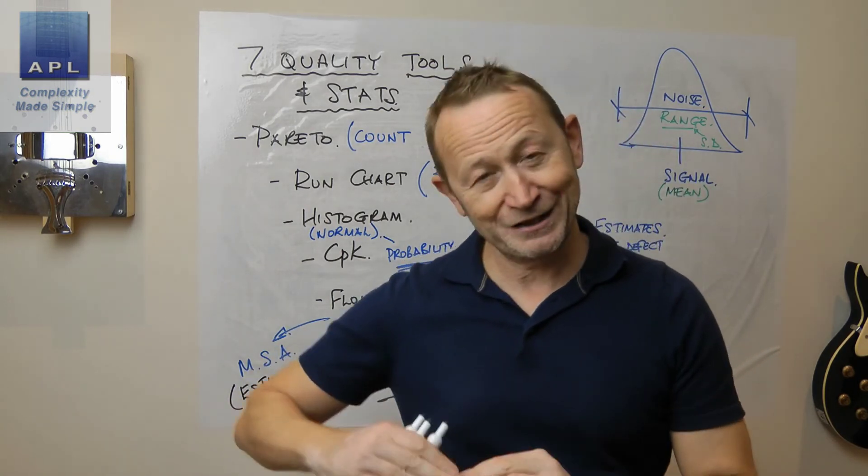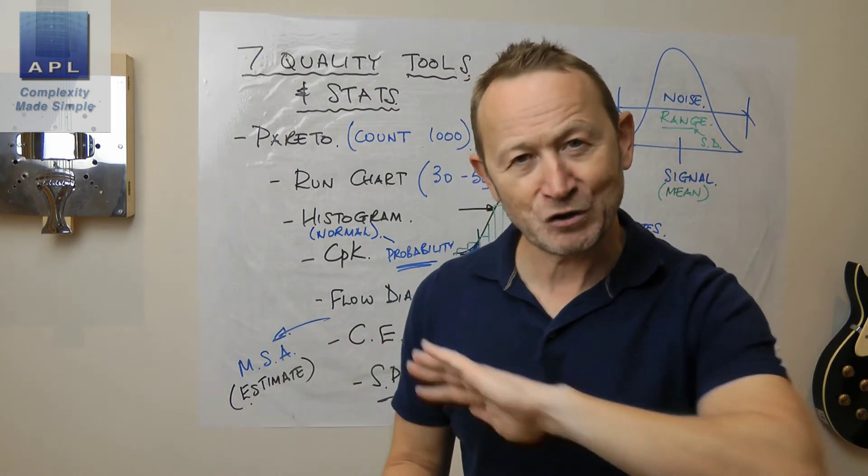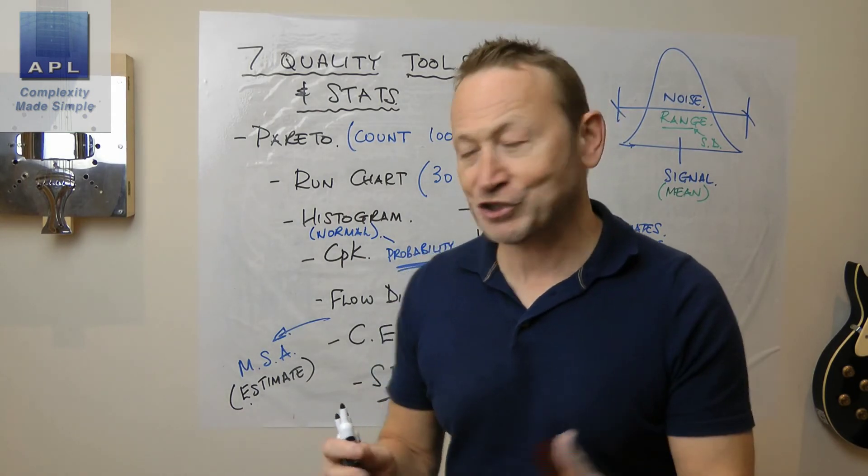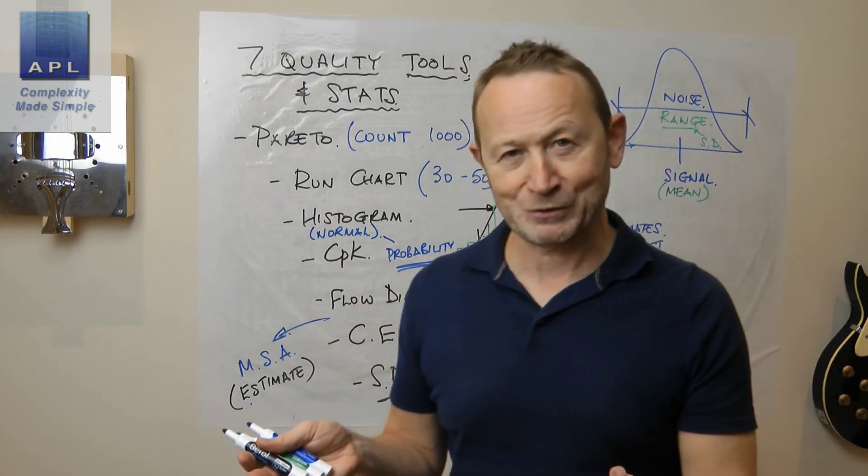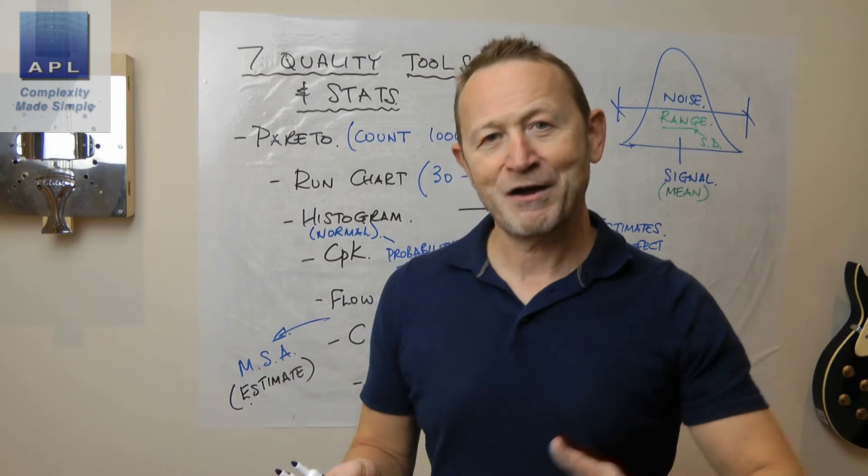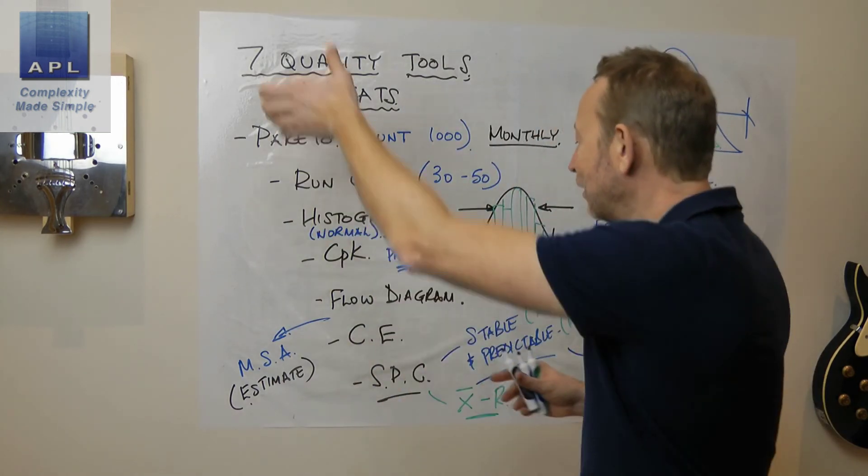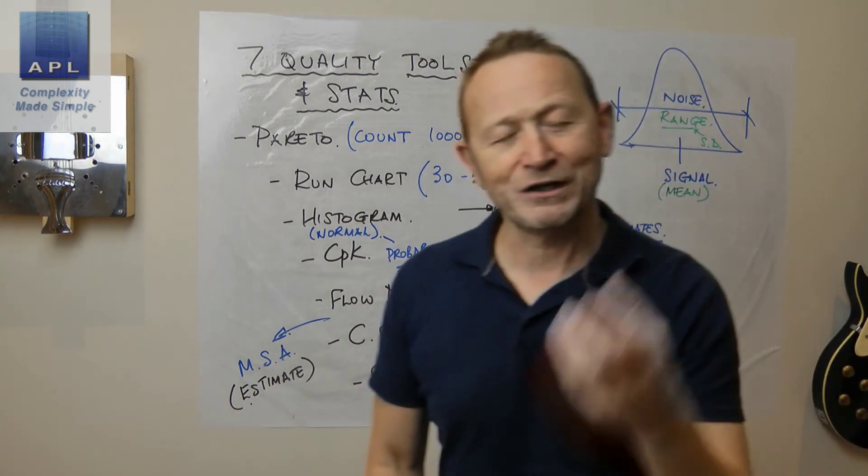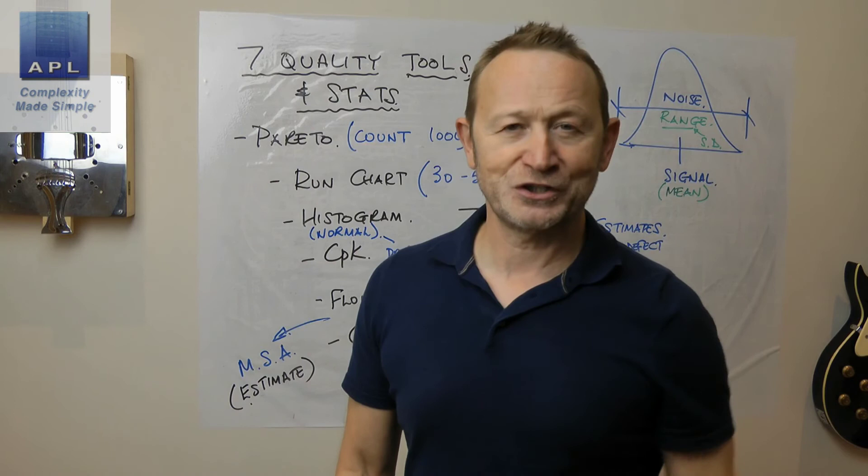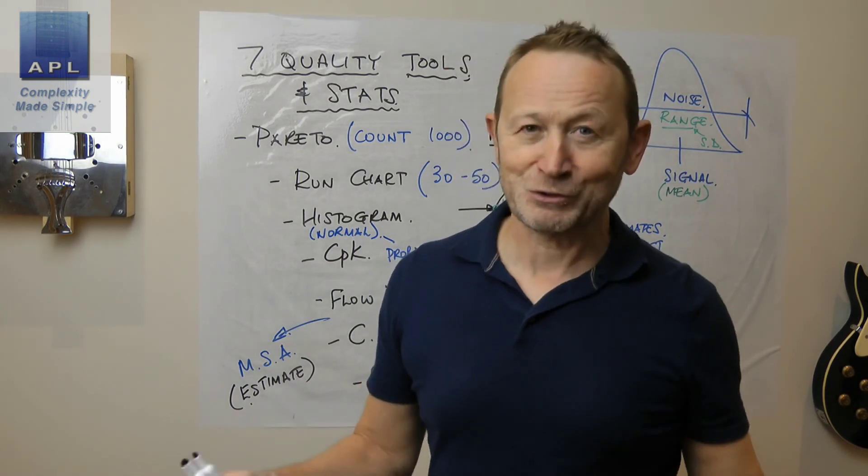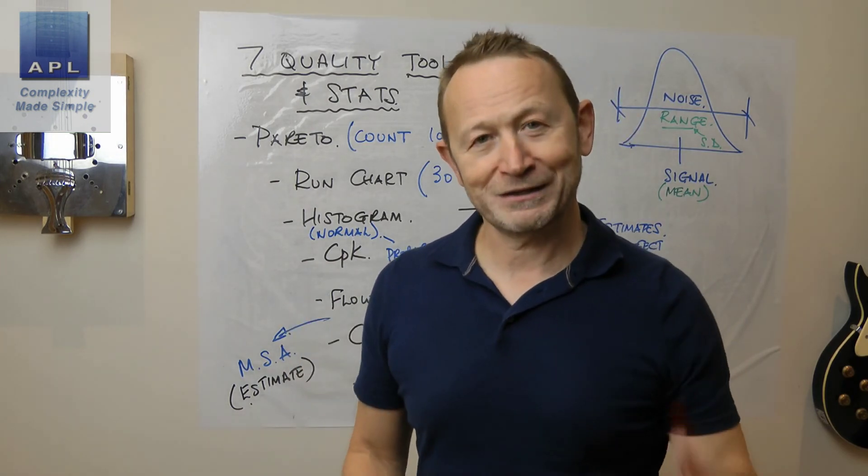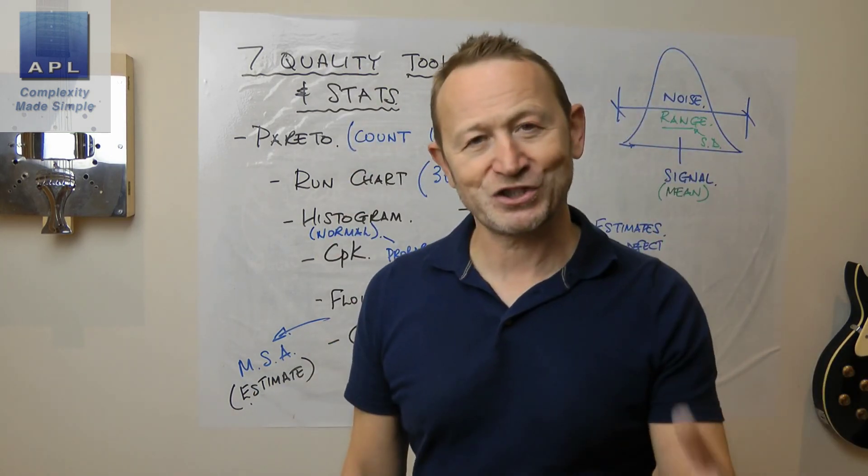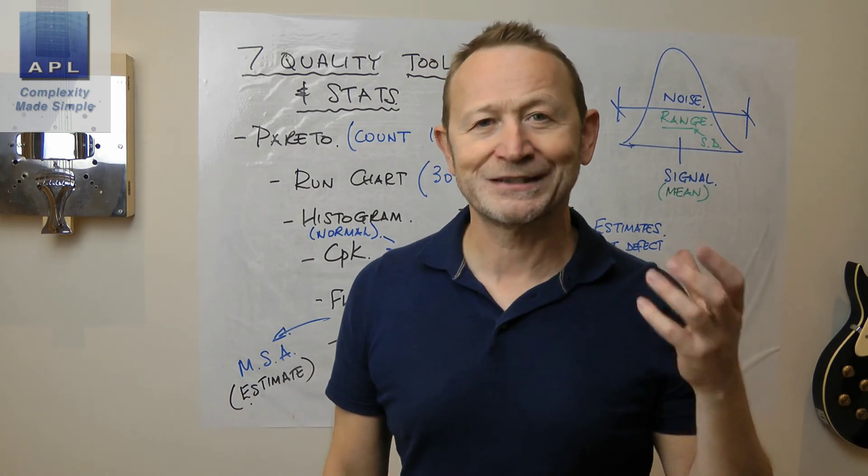But I'm really just leaning on the statistics. I'm not doing the statistics and doing lots of mathematics. But if I understand the underlying principles and I use them, I will make much better decisions. I will learn how to get my CPK inside those tolerances. And of course, ultimately, I'm going to make pots and pots of money. The seven quality tools with statistics built-in.